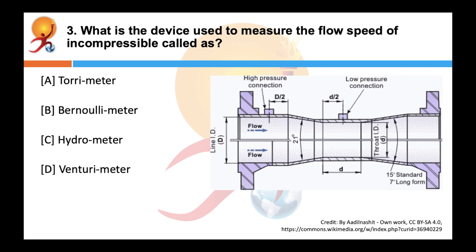What is a device used to measure the flow speed of incompressible fluid called as? Correct answer is Venturimeter. A Venturimeter is a device used to measure the flow speed of incompressible fluid. It consists of a tube with a broad diameter and a small constriction at the middle.